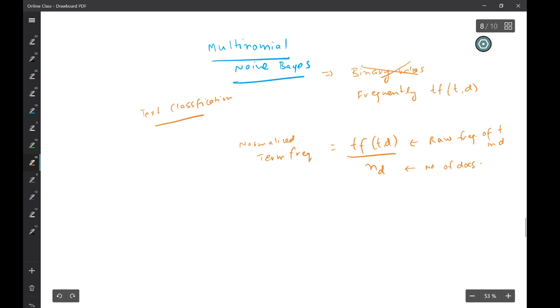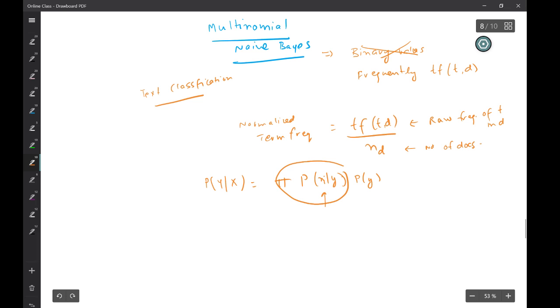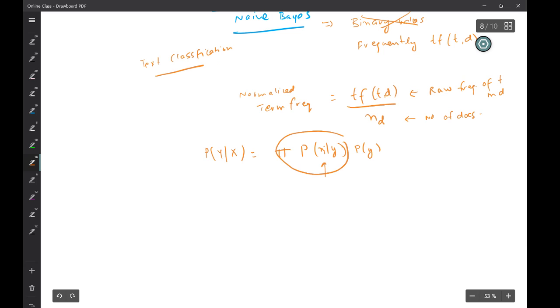For the purpose of classification you again need the conditional probability. In your naive Bayes, while computing P of Y given X, you will take this product P of Xi given Y into P of Y. So you need to compute this product and specifically this conditional probability. This formula we have already seen. This probability can be estimated as...